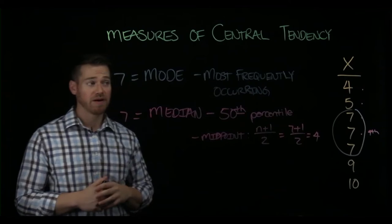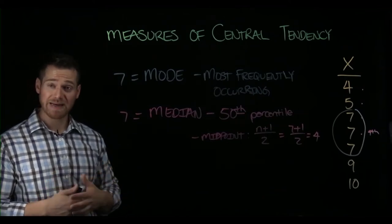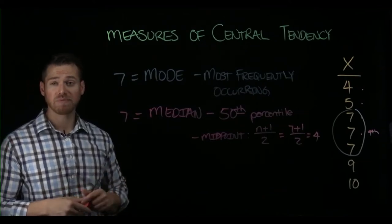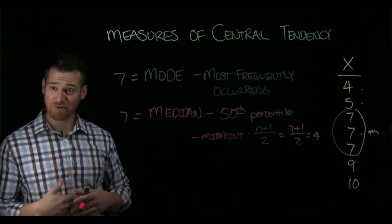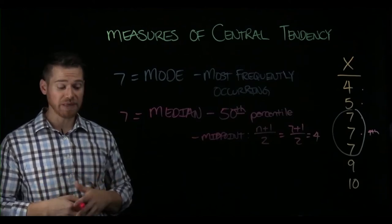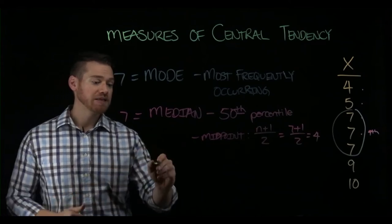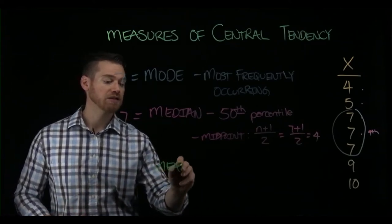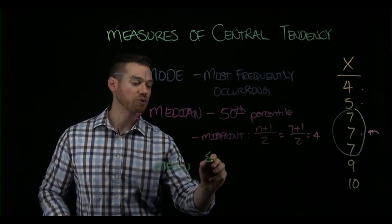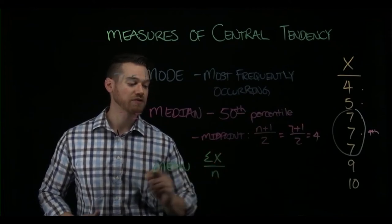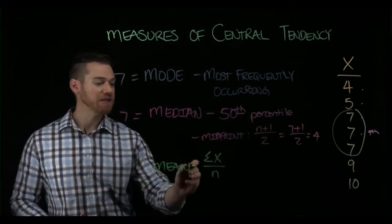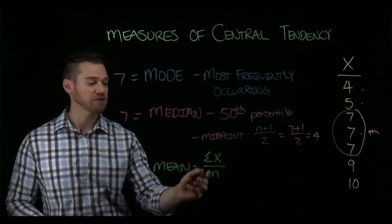The last one we'll talk about is the one that requires a little bit more mathematics. It's the arithmetic mean. Now you might have referred to this simply as the average, and we'll just refer to it as the mean for the rest of our class. The mean requires us to take the sum of the scores and divide by the number of scores. So every mean is a sum over a count.